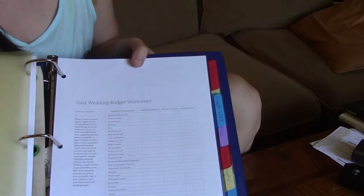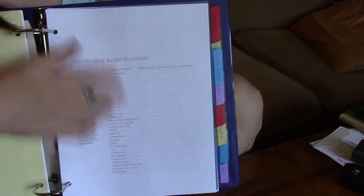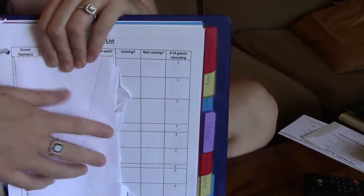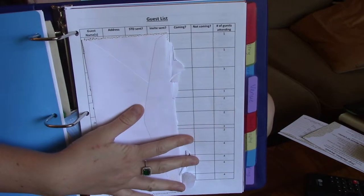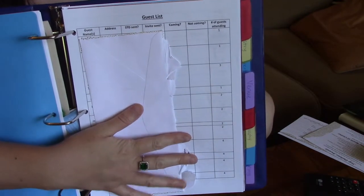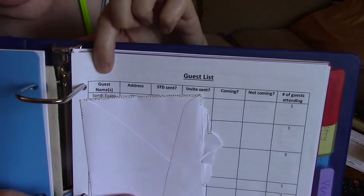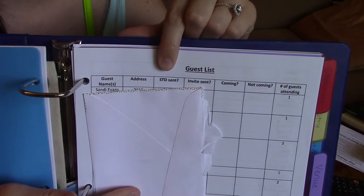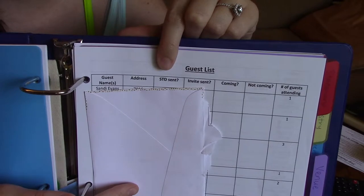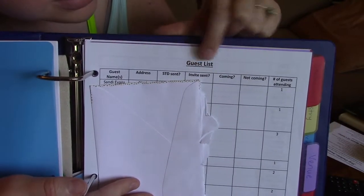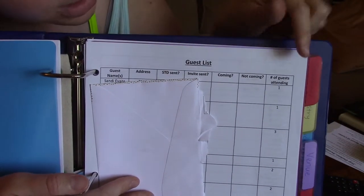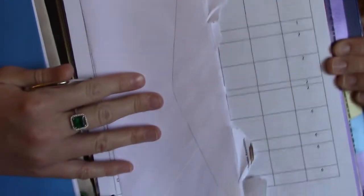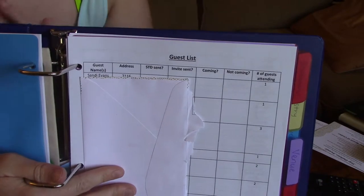The next one is budget. Simply just printed out worksheets off of line as well. The next tab is guest list. Now I simply just made this chart on Microsoft word. I'm just covering addresses up right now. So the very first column is the guest names and then we have addresses and then, did we send the save the date? Obviously we'll go back and check these off once we do send them. And then invite sent and then are they coming or are they not coming? And then number attending, which we already have that filled out, but if for some reason they're not bringing a plus one, we can update that as well.